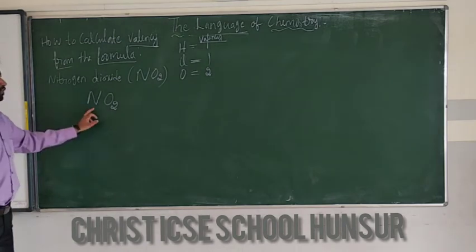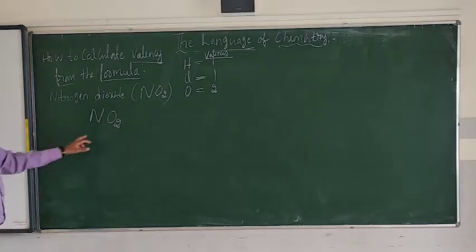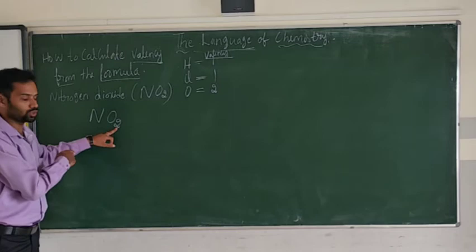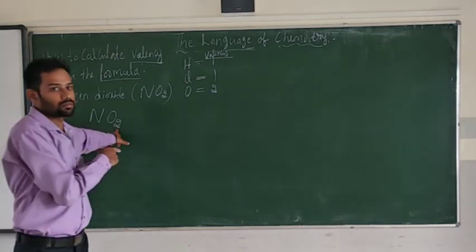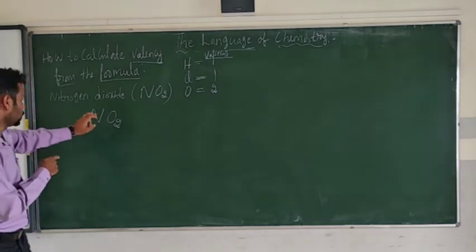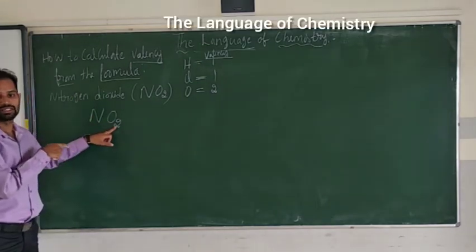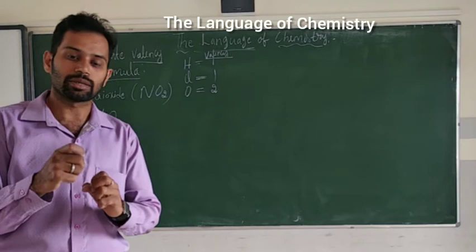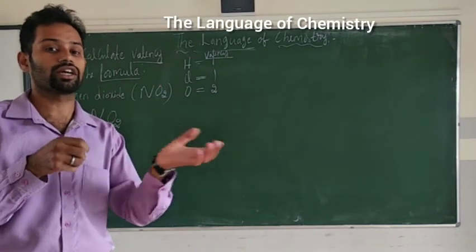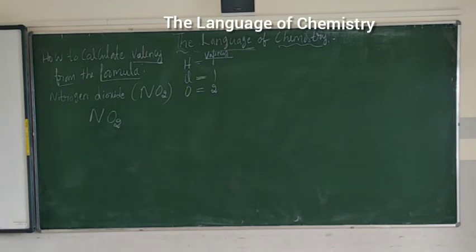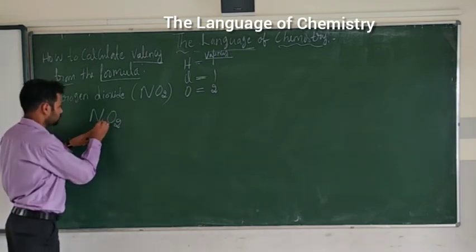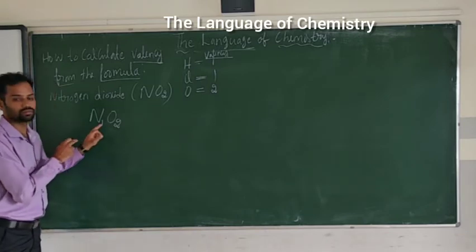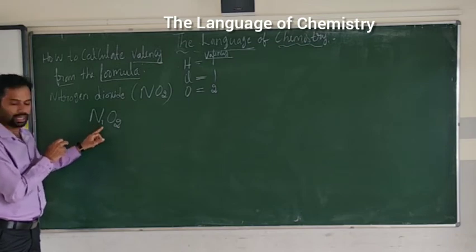So first method: write the formula NO2. The number 2 below oxygen is called the subscript. When no number is written, it means 1 only. These numbers written below the element are the subscripts.